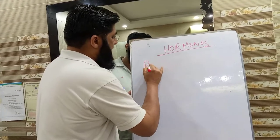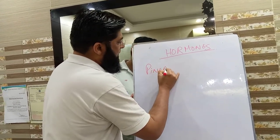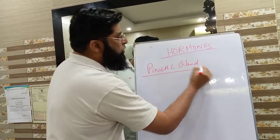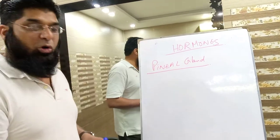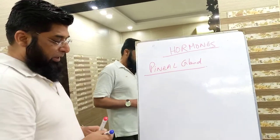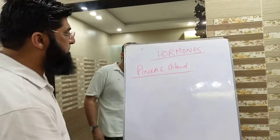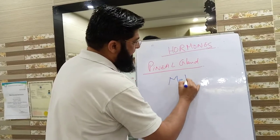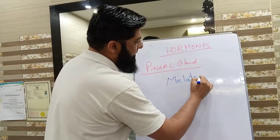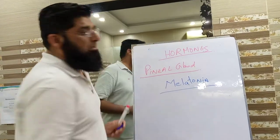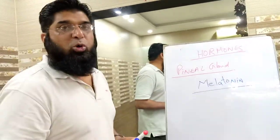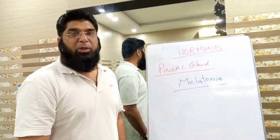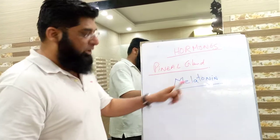Next: Pineal gland. The pineal gland is also present in the brain, close to the hypothalamus and pituitary gland. The main hormone produced by the pineal gland is Melatonin, which is related to pigmentation and skin melanocytes.